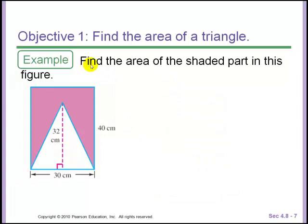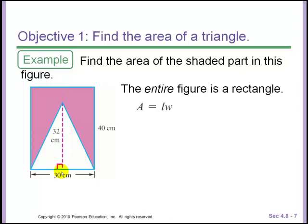Here is a slightly more complicated problem. It says find the area of the shaded part in this figure. This whole figure makes up a rectangle. If we ignore the triangle part in the middle and just thought this was one big rectangle, the area would just simply be length times width, which is 30 times 40 centimeters squared, or 1,200 centimeters squared. However, the whole rectangle is not shaded in. In fact, there is this triangle in the middle that is not shaded. So we need to determine how much is not shaded and then subtract that from the shaded area.